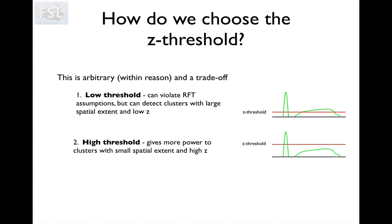On the other hand, if you choose a high threshold, we completely miss this cluster. But because we have a higher cluster forming threshold, the threshold for the size to be significant is smaller, so chances are we're going to say that this is significant. Depending on whether we choose a low or high threshold, we end up with different clusters being significant. It's clearly not ideal that this arbitrary threshold determines which clusters we find.